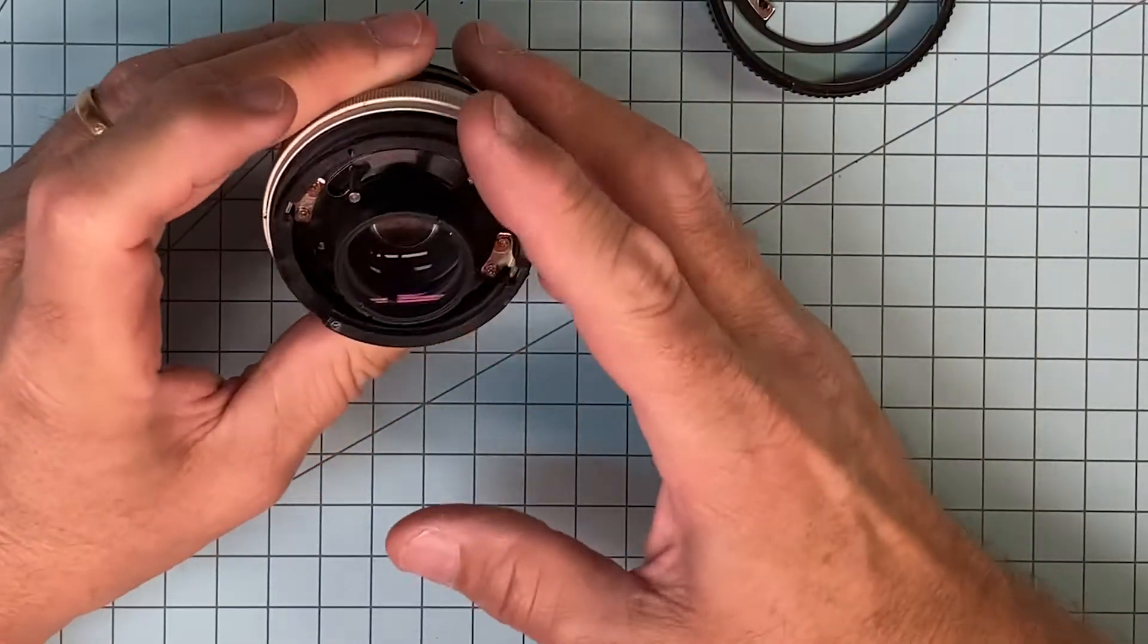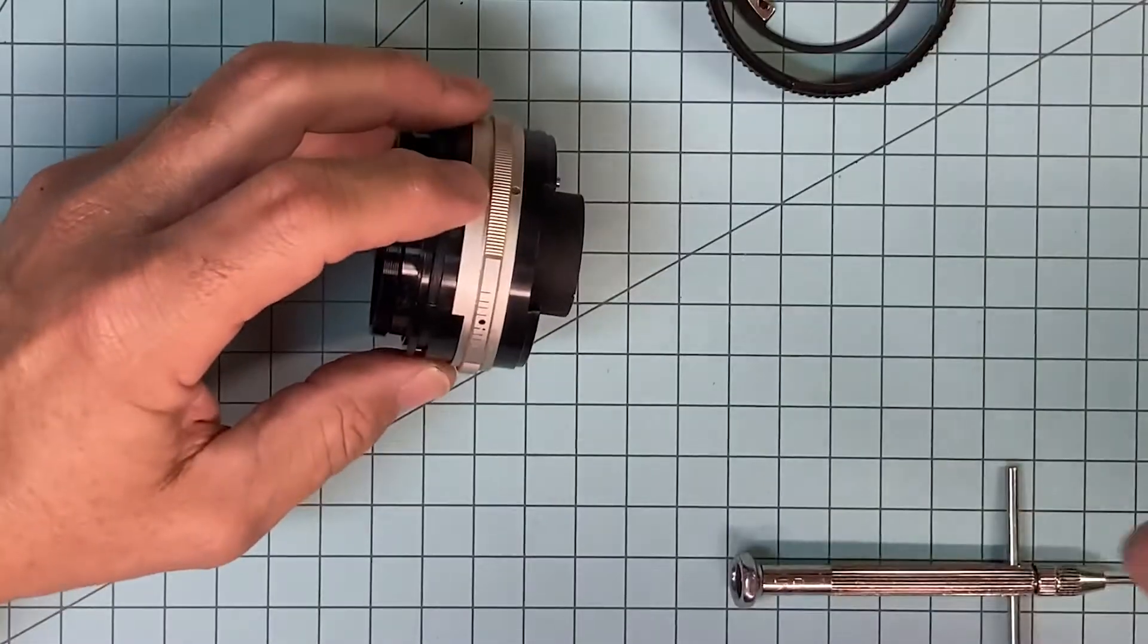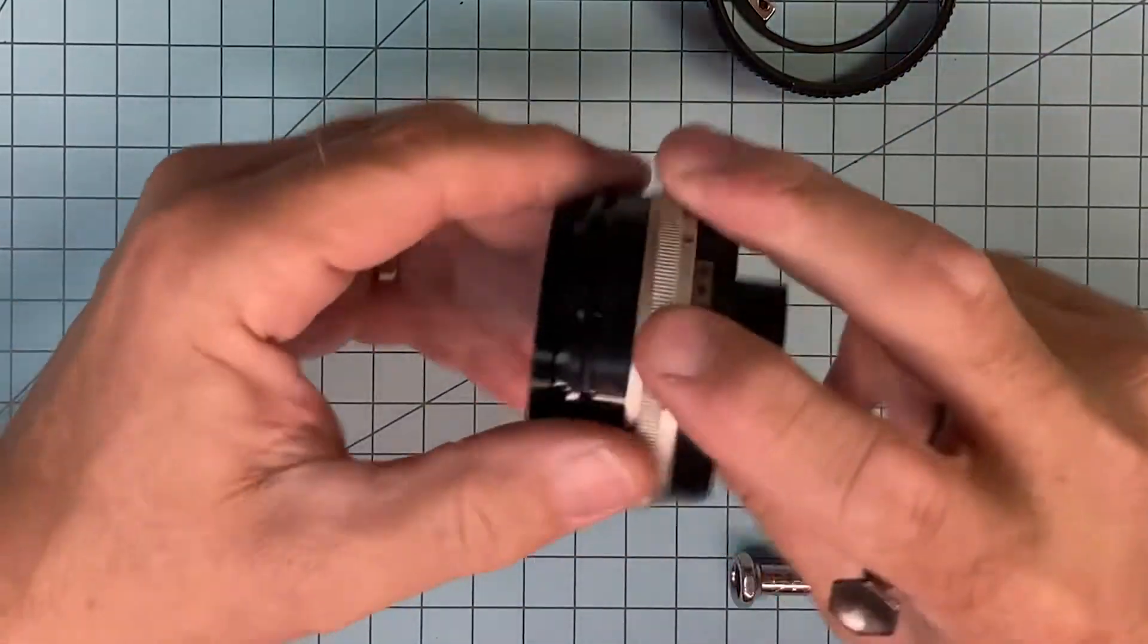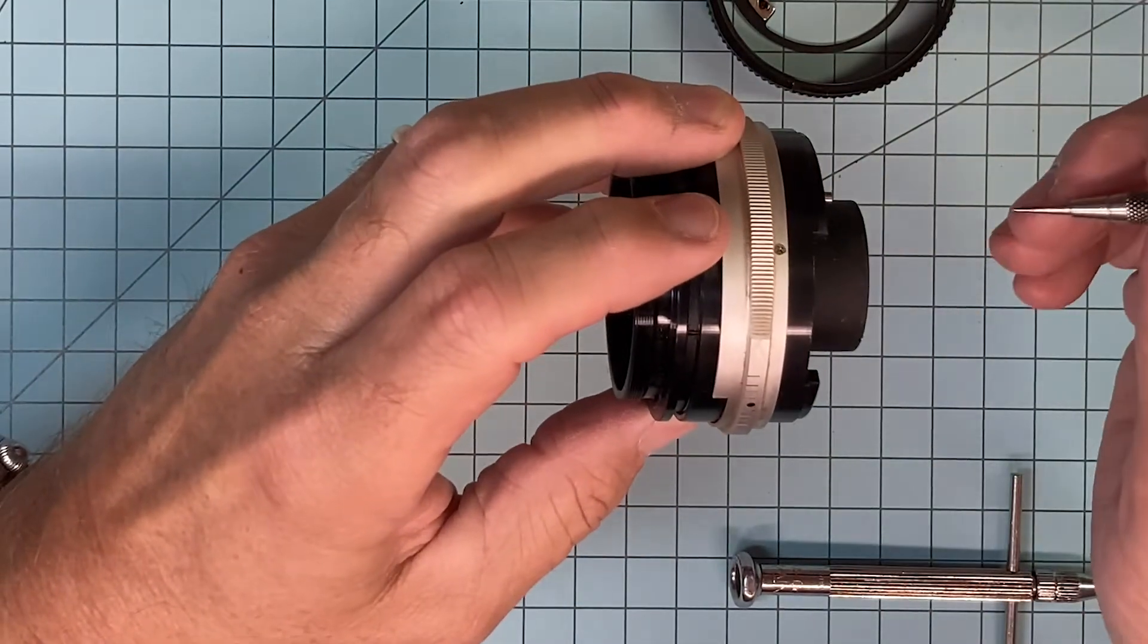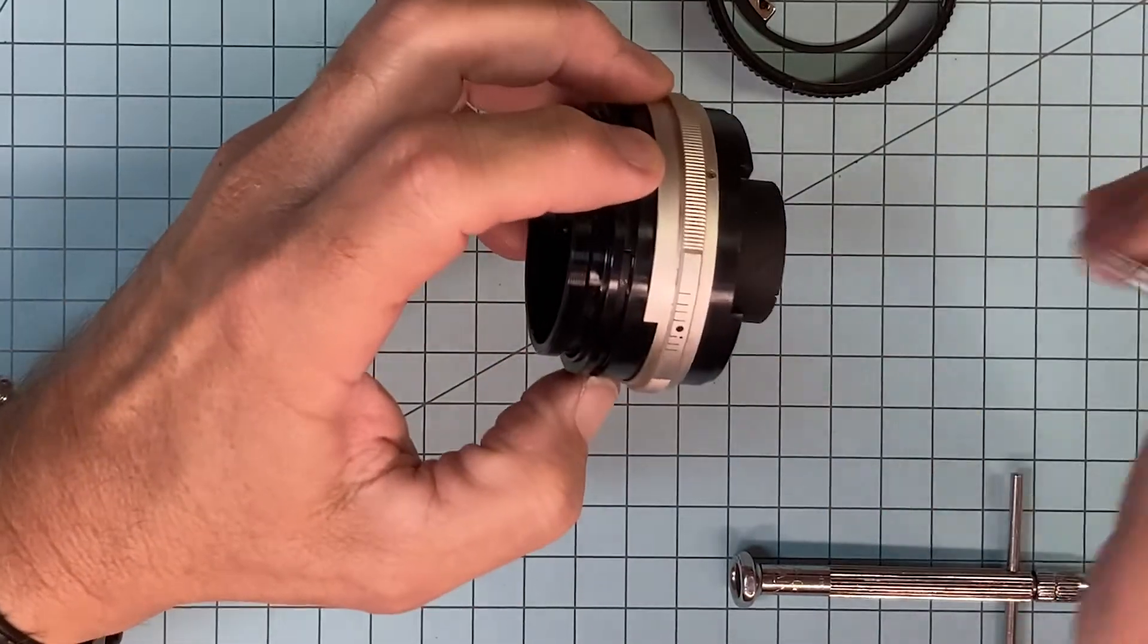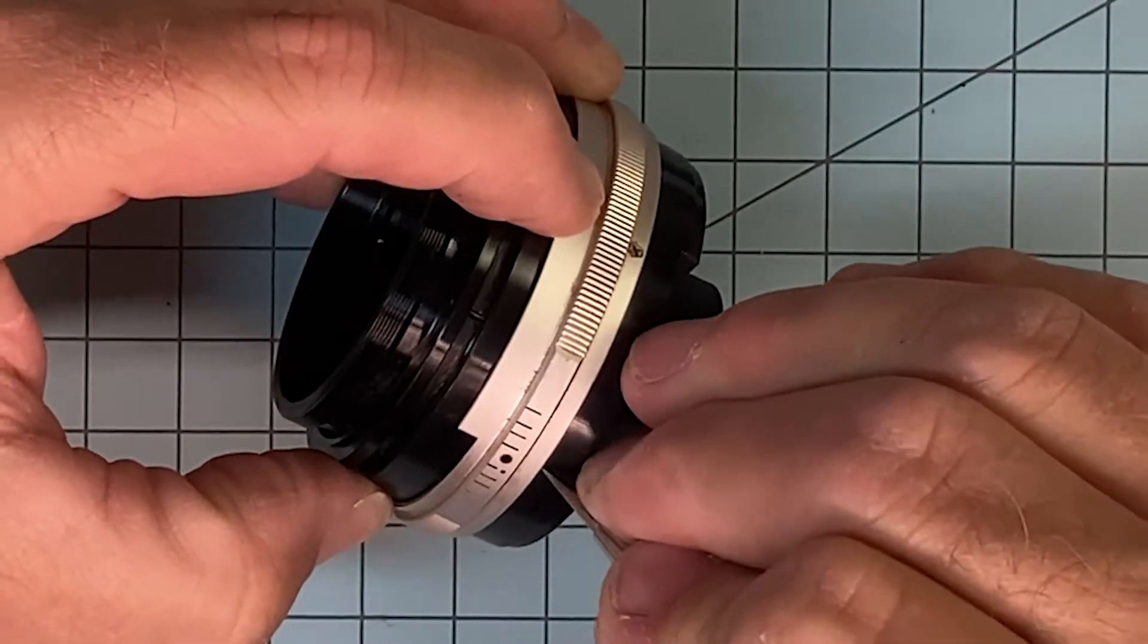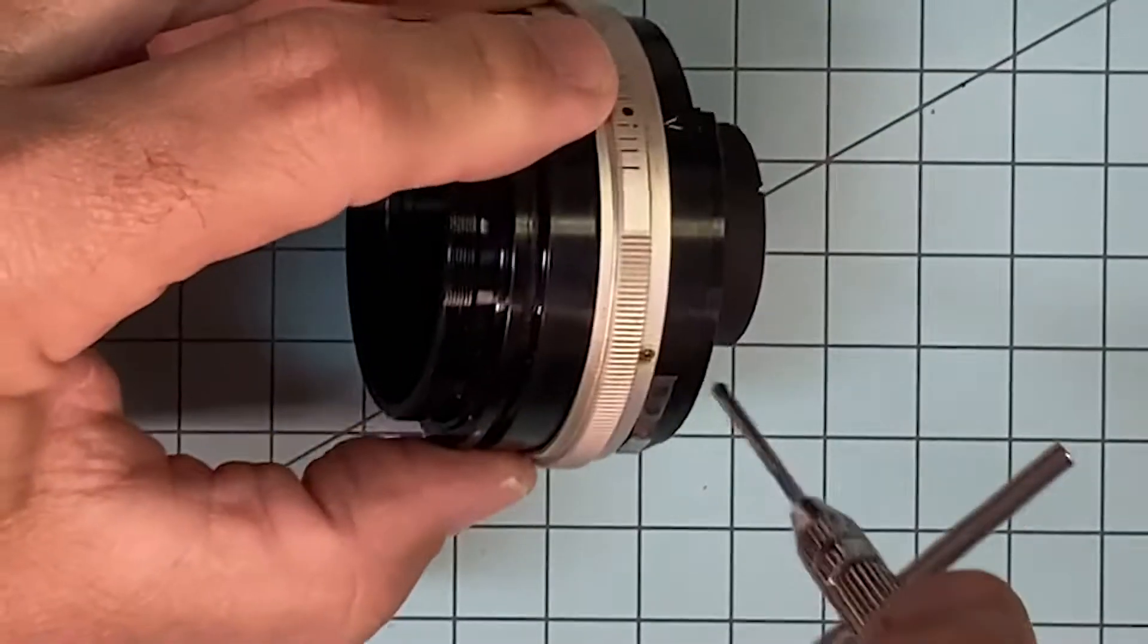Now here's where you start to get into issues. You need to know where the front is. As soon as I take this ring off, it's got the front index. As soon as I take that off, you do not have a mark knowing where the front of the lens is. There are ways to find it out, but you do not know. So I always do this: always put a mark on it telling me where my front is. I like to use an arrow.